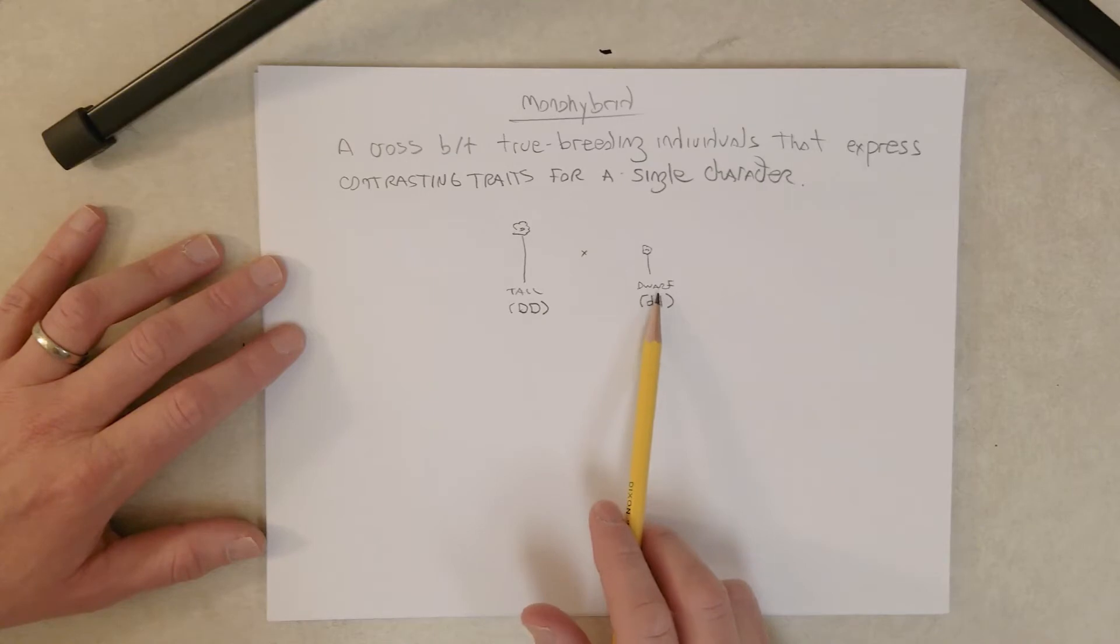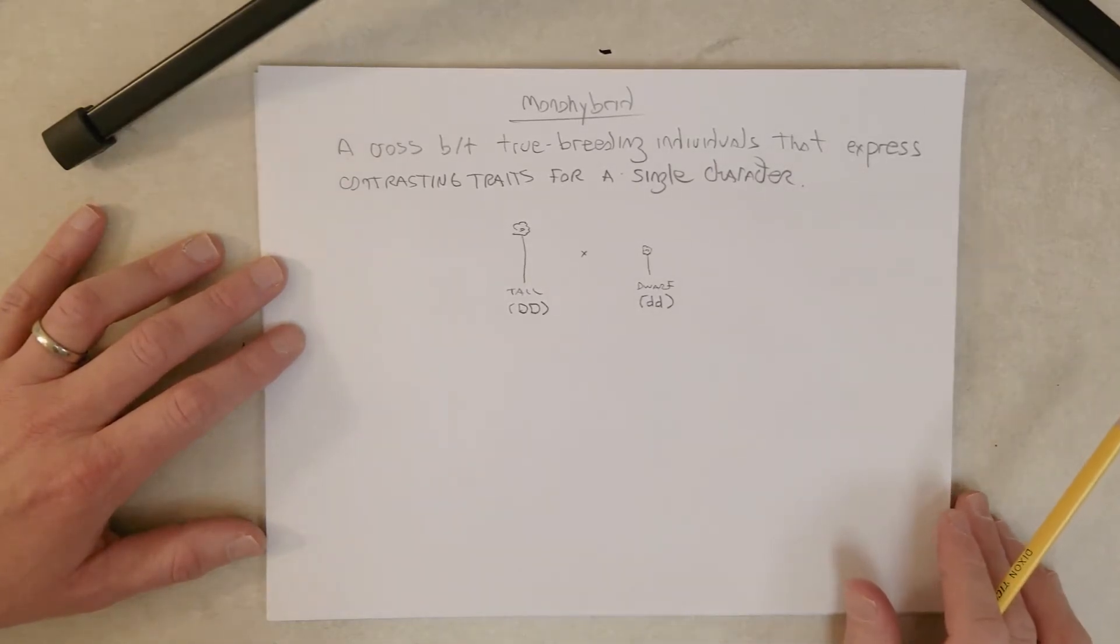Same thing for dwarf: if he crosses the dwarf plant to another dwarf plant from a true breeding dwarf plant, all of the offspring are dwarf. And I will go back and forth between progeny and offspring; they mean essentially the same thing.